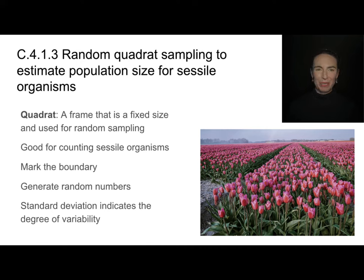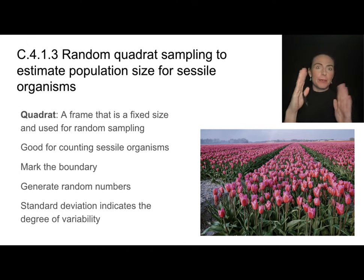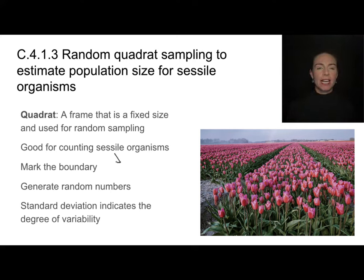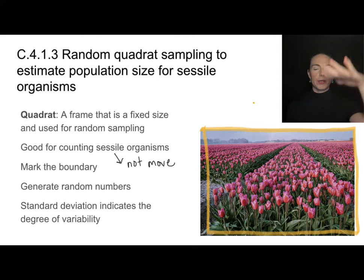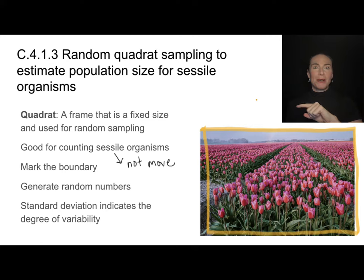We'll talk about a few different sampling techniques, one of which is the use of a quadrat. A quadrat is a frame of a fixed size — usually a one-meter by one-meter frame — and we use this for random sampling, particularly when we have sessile organisms. Sessile organisms are ones that do not move around, such as plants. You wouldn't want to use a quadrat for birds. What you do is mark your entire area boundary and then use the fixed frame to estimate the sample size.